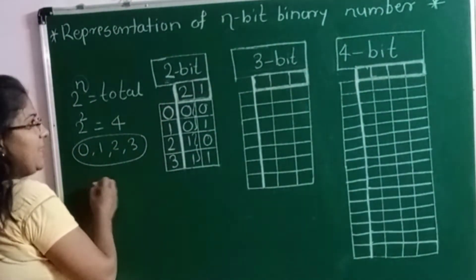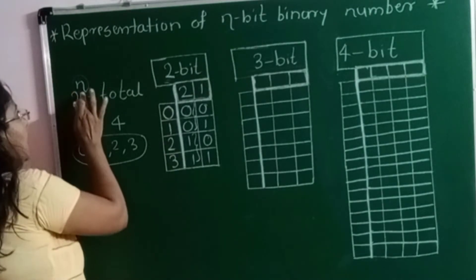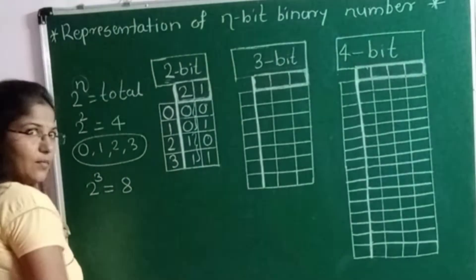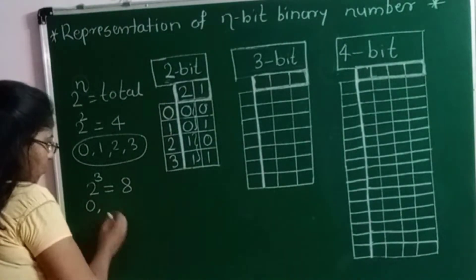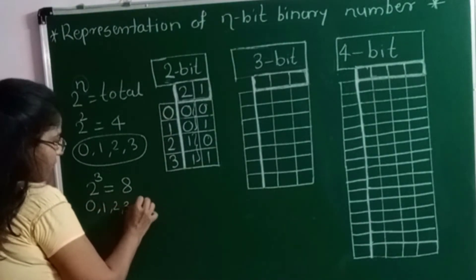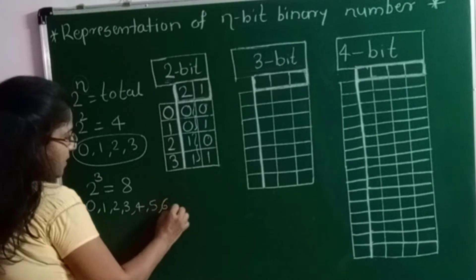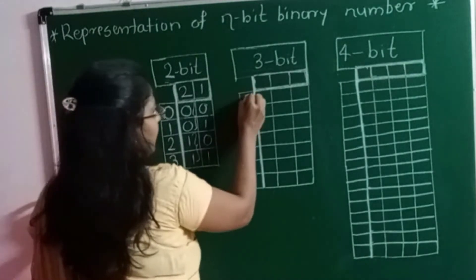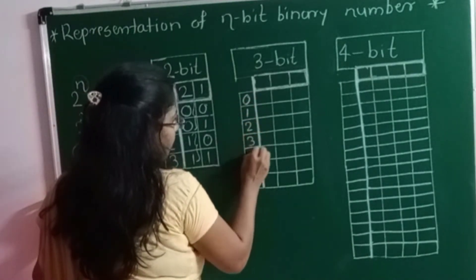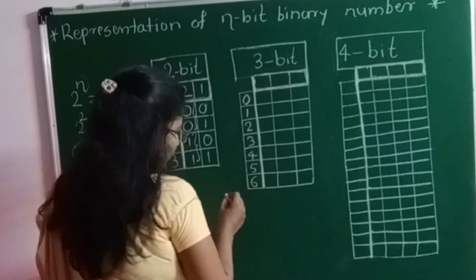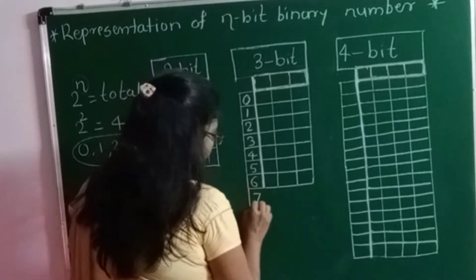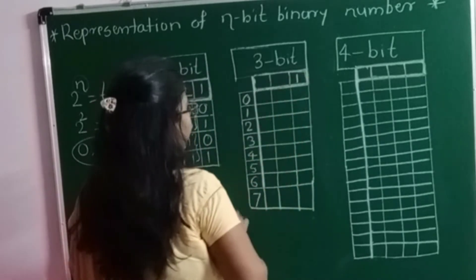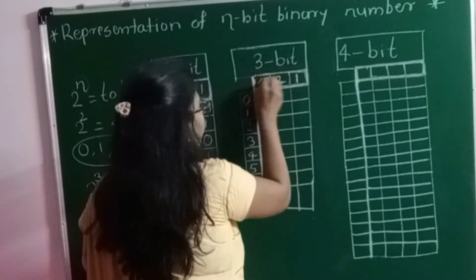The next table is 3-bit. Using 3-bits, how many numbers can we represent? 2 raised to n, where n equals 3, so 2 raised to 3 equals 8. Starting number is 0 through 7. The weighted values for the 3-bit binary number are 1, 2, and 4.